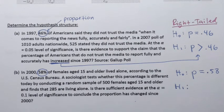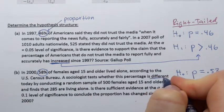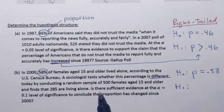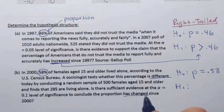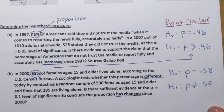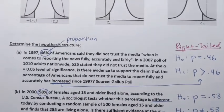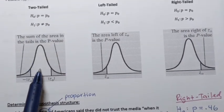The alternative hypothesis states that the value of the population proportion differs from 58%. What keywords do we find? The problem says a psychologist tests whether this percentage is 'different' today, and later asks whether the proportion has 'changed' since 2000. Notice it does not specify whether it has increased or decreased — it just says different. So mathematically, the population proportion is not equal to 0.58. When we use the not-equal sign for the alternative hypothesis, that determines the two-tailed hypothesis structure.